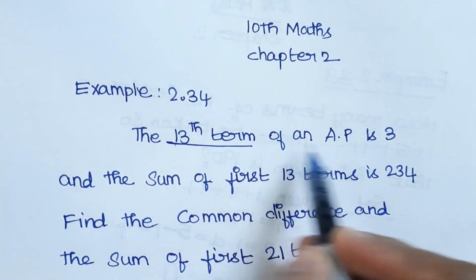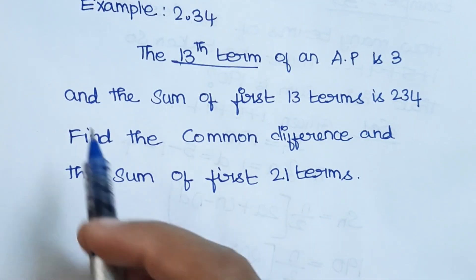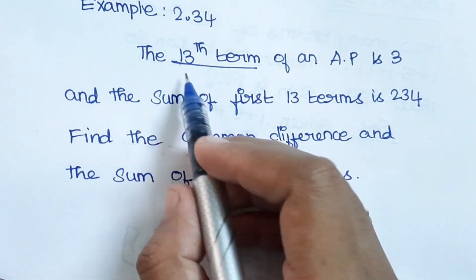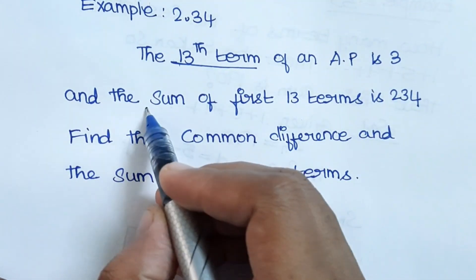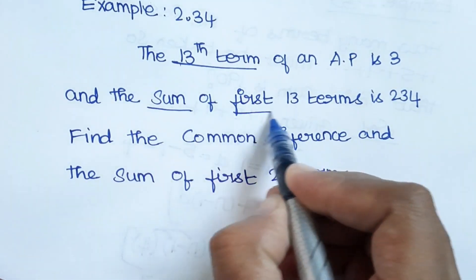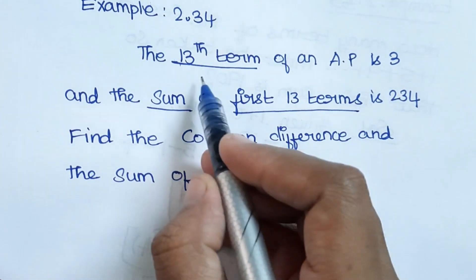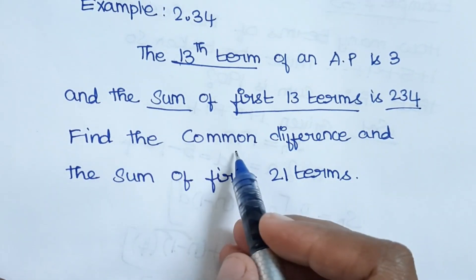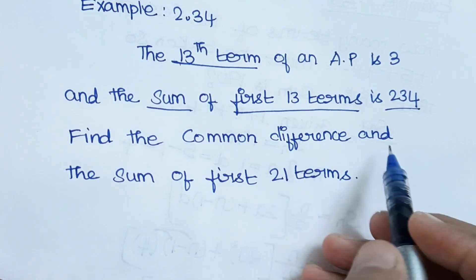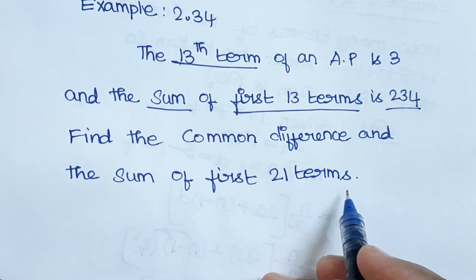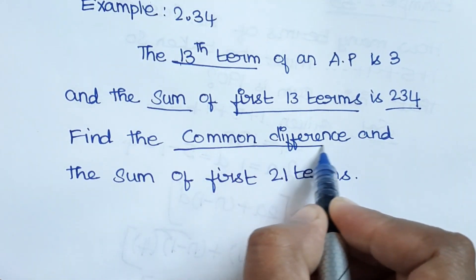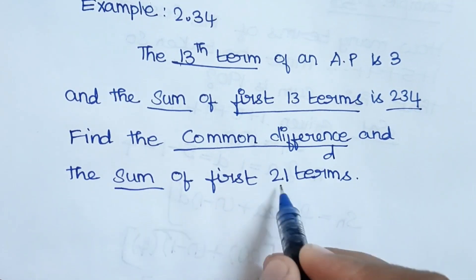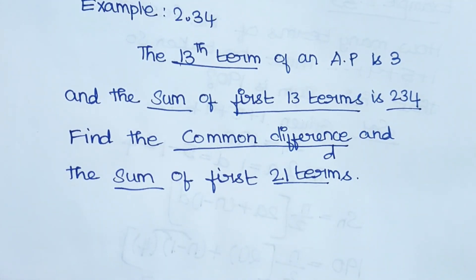The 13th term of an AP is 3, and the sum of the first 13 terms S(13) is equal to 234. Find the common difference D and the sum of the first 21 terms S(21).